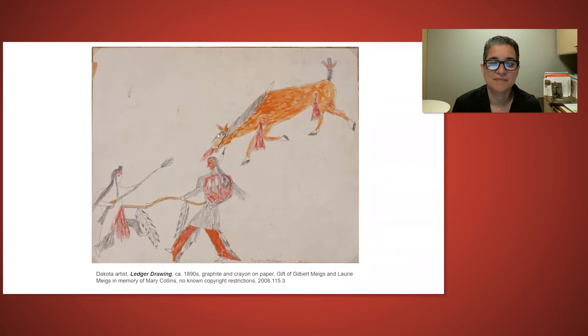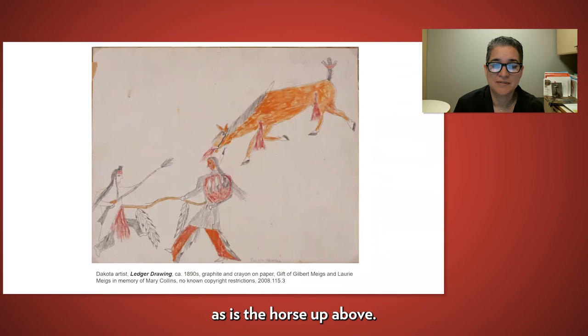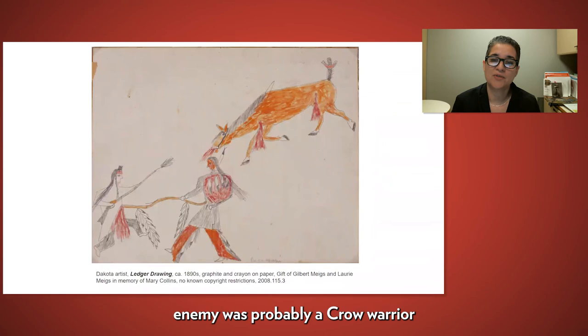The event depicted in this drawing did not end well for one of the warriors. On the left, we can see that the artist's enemy is bleeding badly, as is the horse up above. There are many details the artist included to remember this event. The horse's tail is tied with what appears to be red trade cloth, and we can tell that his dying enemy was probably a Crow warrior because of his hairstyle.